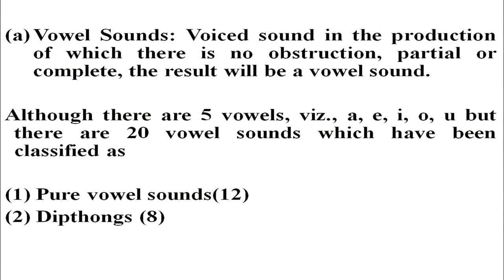Now vowel sounds. In the production of voice sounds in which there is no obstruction, partial or complete, the result will be a vowel sound. Although there are five vowels — A, E, I, O, U — there are 20 vowel sounds, which have been classified as pure vowel sounds, 12 in number, and diphthongs, 8 in number.